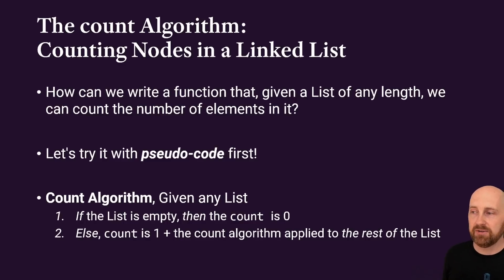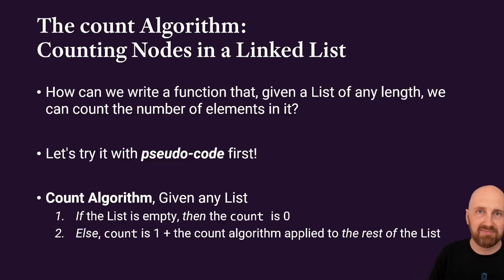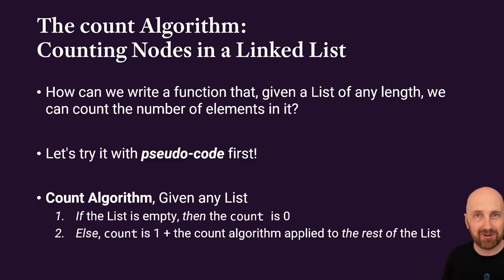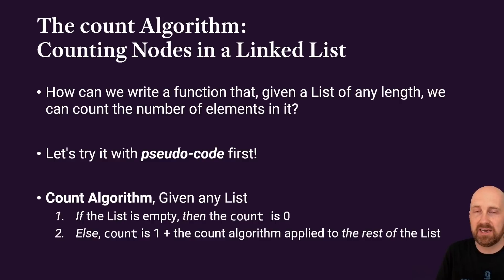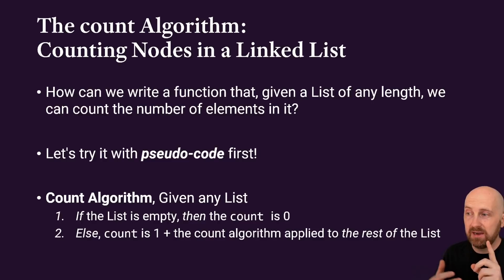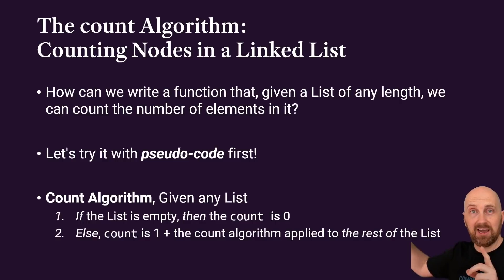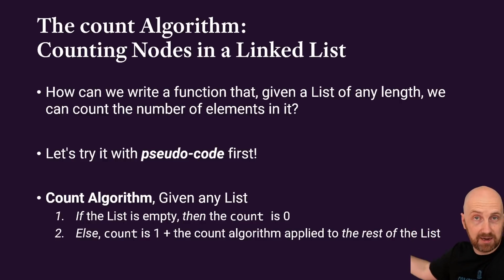Let's try this with pseudocode first. Here's the count algorithm: if the list is empty, then the count is zero — if we ask the length of an empty list, it's zero. Otherwise, the count is one plus the count of the same algorithm applied to the rest of the list. That's the recursive step: if I'm not empty, I know there's one, and I don't know how many come after me, so I ask the next node to count itself and how many come after it.